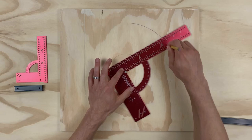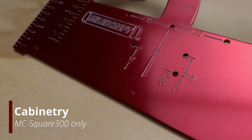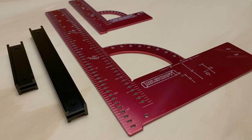Draw perfect circles up to almost 9 and 19 inches in diameter. For cabinetry, the MC Square 300 has you covered to lay out shelf pins and hinge cups.